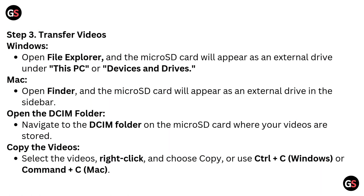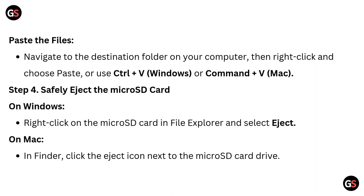Step 3: Transfer videos. On Windows, open File Explorer and the microSD card will appear as an external drive under This PC or Devices and Drives. On Mac, open Finder and the microSD card will appear as an external drive in the sidebar. Open the DCIM folder and navigate to where your videos are stored. Select the videos, right-click and choose Copy, or use Ctrl+C on Windows or Command+C on Mac.